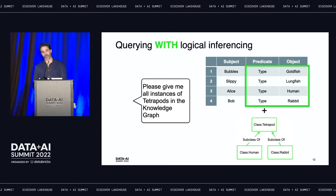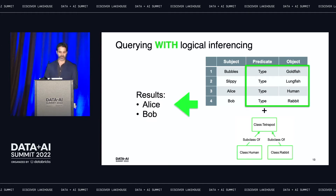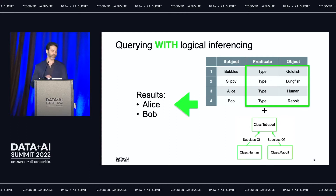When we query with logical inferencing, a scientist issues the same query. Our query engine parses the schema, looks for connections relevant to the query plus the data, then scans through the table with this knowledge and returns the results: Alice and Bob. Alice is of type human, Bob is of type rabbit. Both are subclasses of tetrapods, therefore they are tetrapods, which is why we get results.